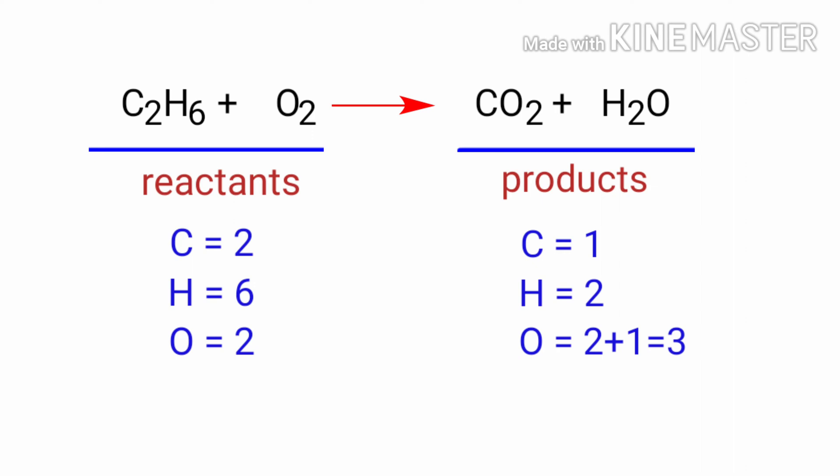In the reactants side, there are two Carbon Atoms, six Hydrogen Atoms and two Oxygen Atoms. At the products side, there are one Carbon Atom, two Hydrogen Atoms and three Oxygen Atoms. The number of Atoms are not balanced on both sides.